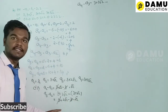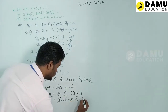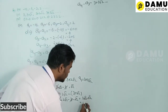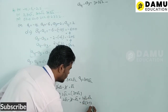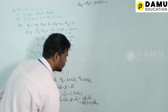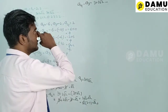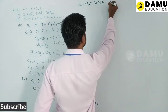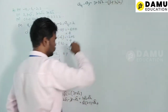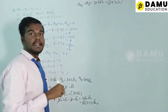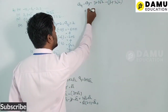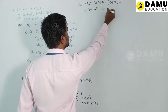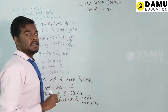The 3's cancel. Taking √2 as common: (2 − 1)√2 = √2. Then a4 − a3 = (3 + 3√2) − (3 + 2√2) = 3 + 3√2 − 3 − 2√2.